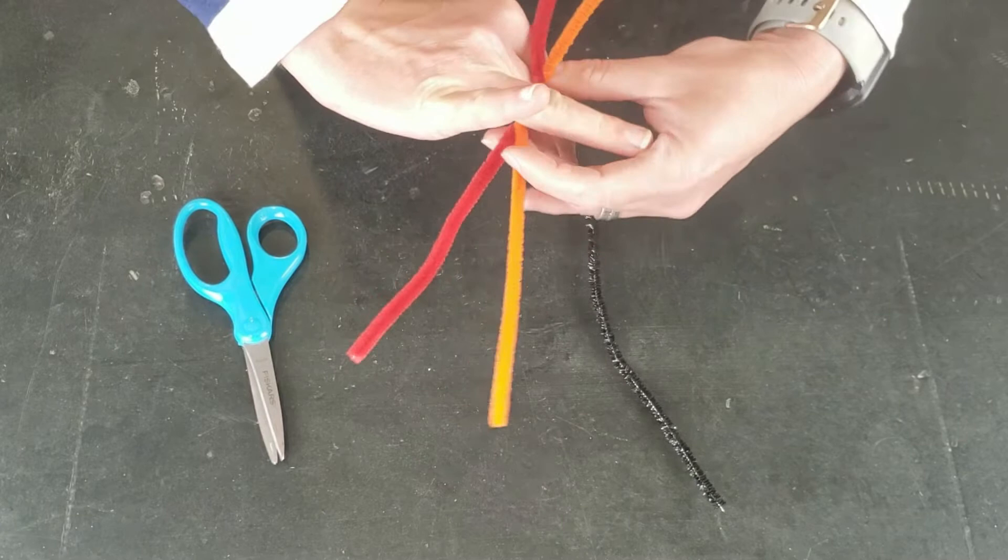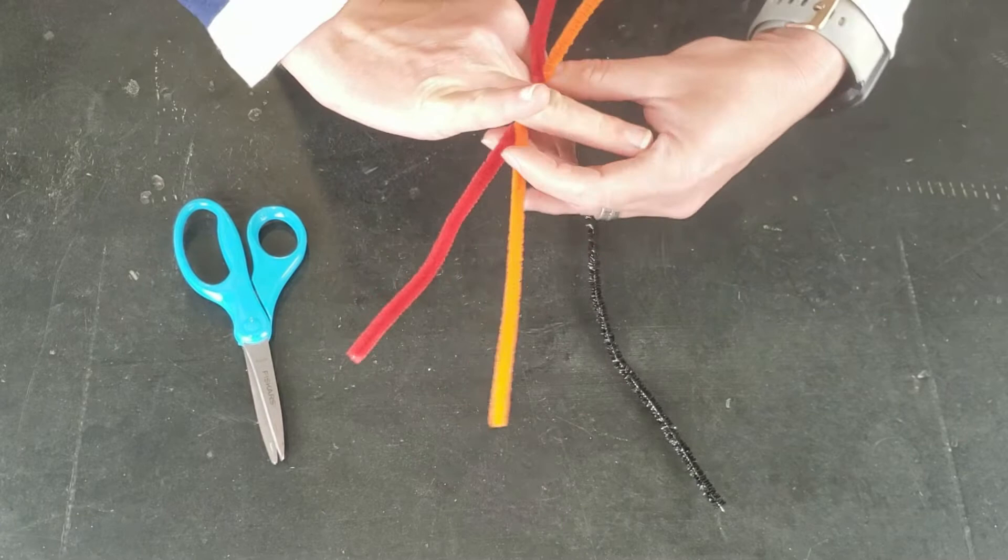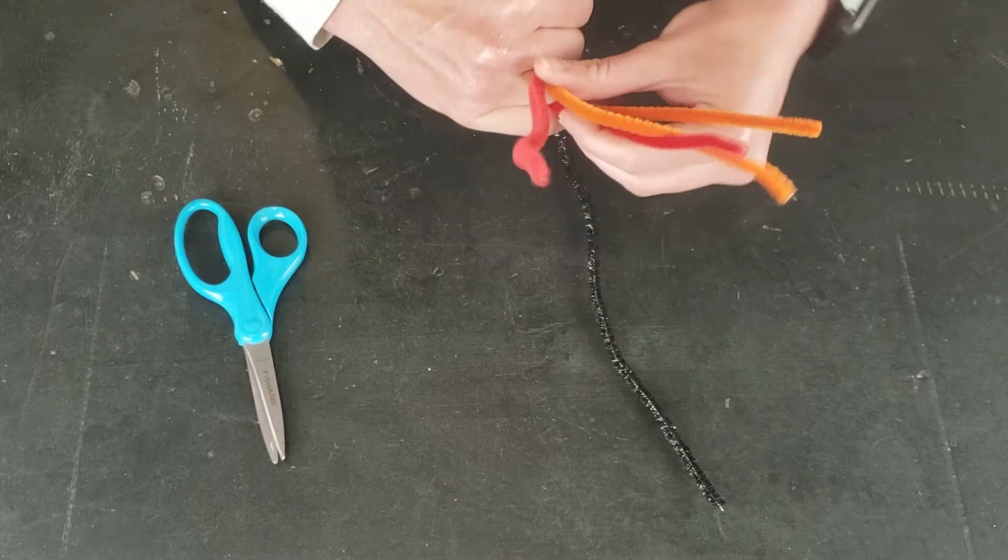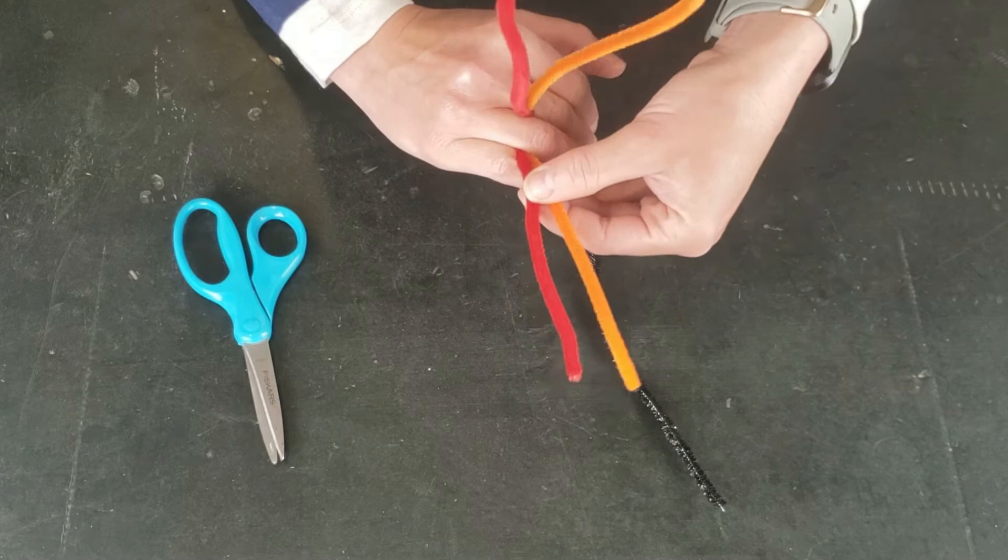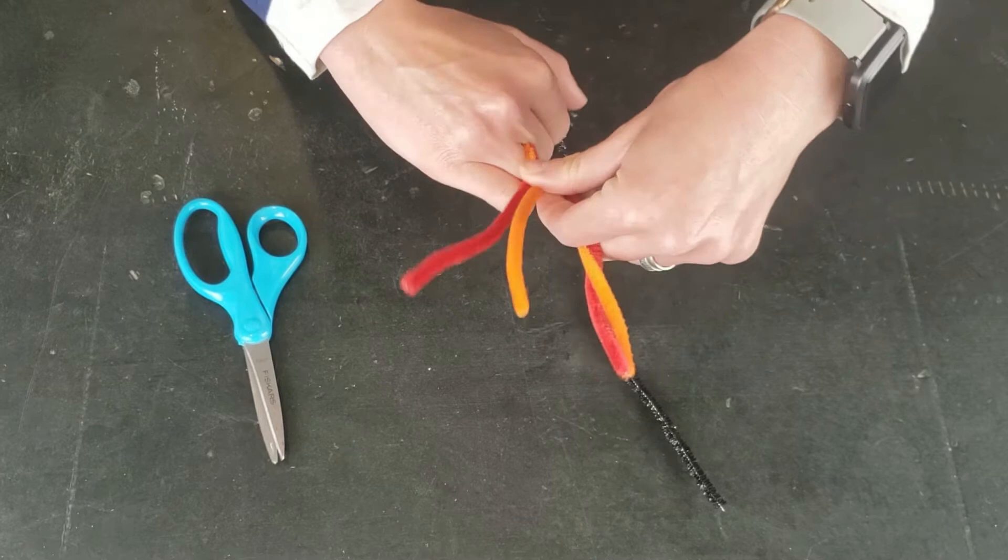And then you want to take your finger because we're making a ring and shape the pipe cleaners around your finger and then twist each side. So there's one side that has the orange and the red and then the opposite side, and you'll take both of those groupings and twist them around each other.